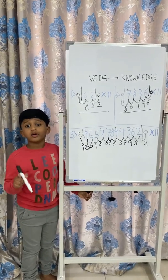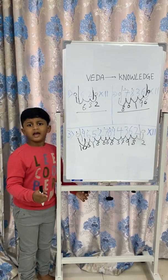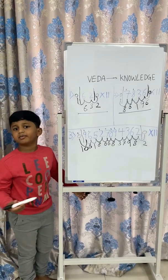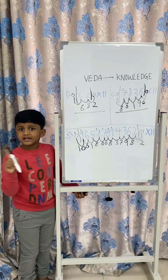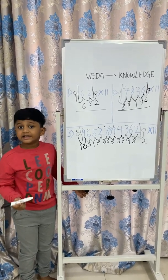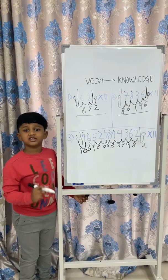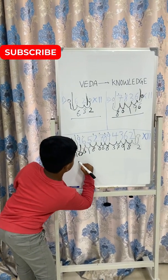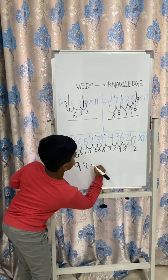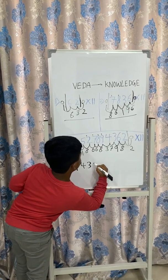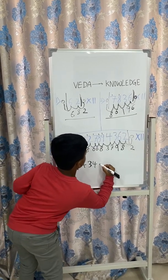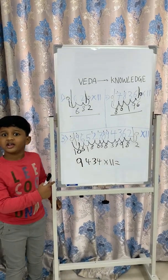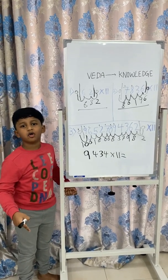Friends, now I want to give you one question and you need to solve it with this method I have just explained you now, and do not use calculators because excessive use of calculators atrophies your brain. And your question is 9434 multiplied by 11. Solve this question and post your answers in the comment section below.